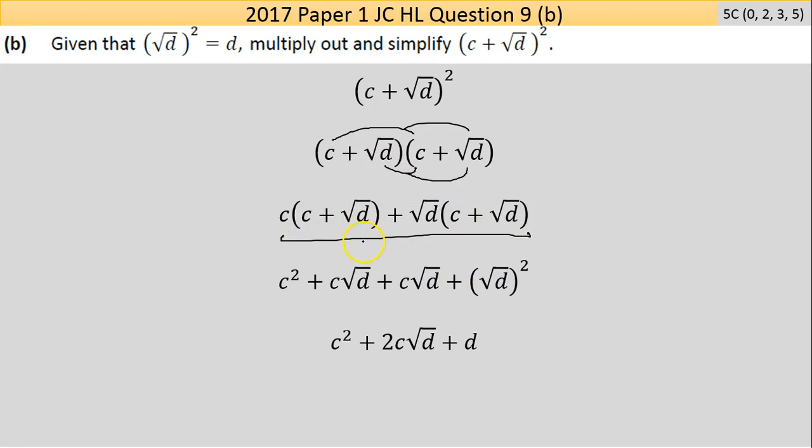We go left to right: c times c is c squared. c times square root of d - they're different terms, so we leave it as c times square root of d. The same thing here, square root of d times c. Last thing is square root of d times square root of d. Everything under the square root times itself - that's square root of d squared. The square root and squared cancel each other, leaving you with d on its own.